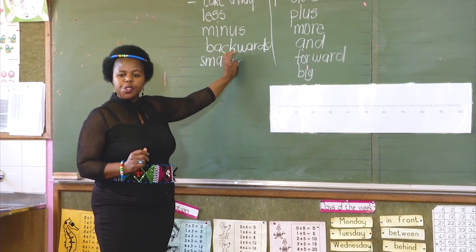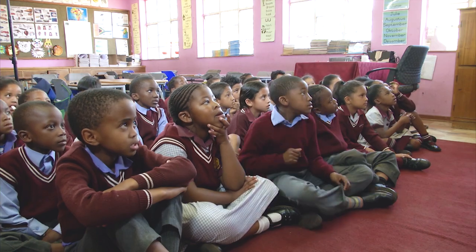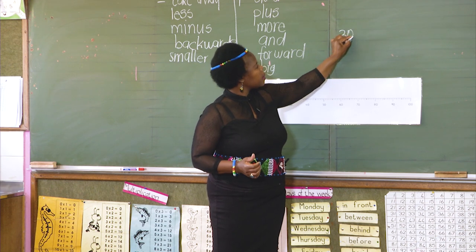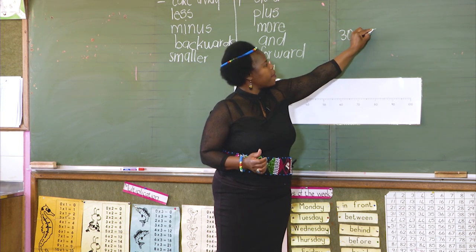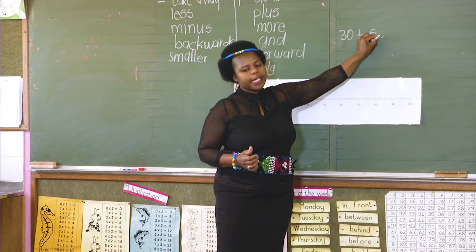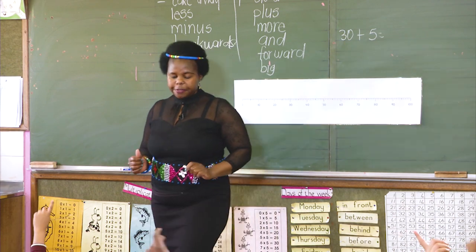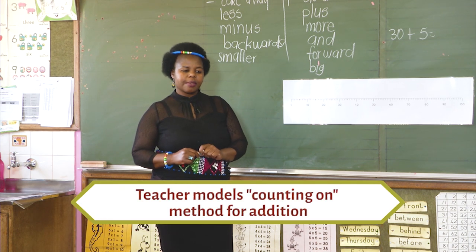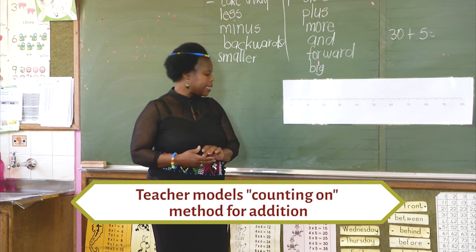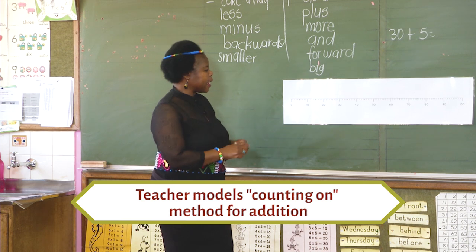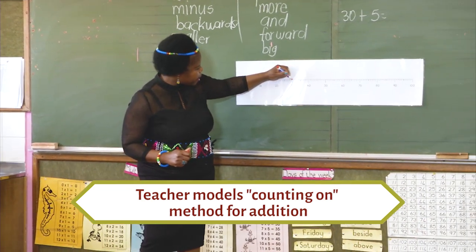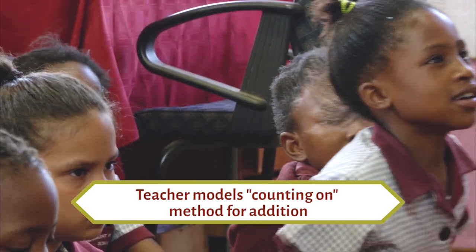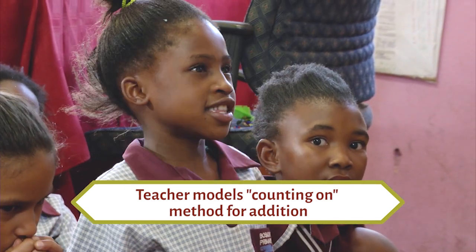So we are going to work on the number line using these two signs — take away and plus. When I write 30 plus 5, you go to your number line and plot the number 30. After plotting, what must you do? — You must jump up to number 35.